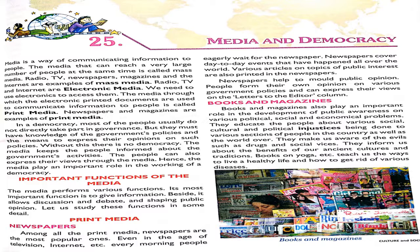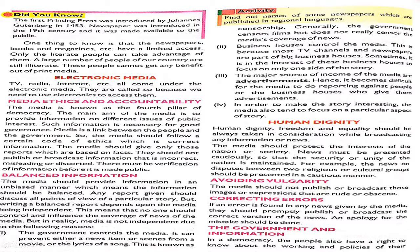In magazines, you can find articles on injustice, so that people who want to read about it will get full benefit — such as how many books and magazines are available. Now, electronic media — where electricity is used, that means of communication is called electronic media. Media ethics and accountability are important, because media is known as the fourth pillar.